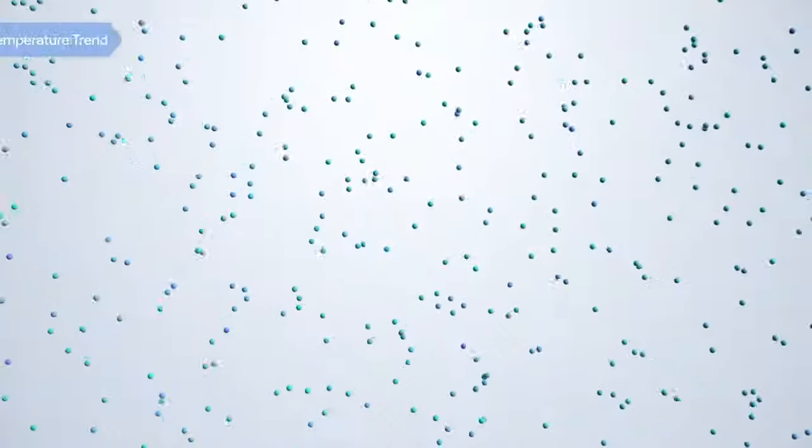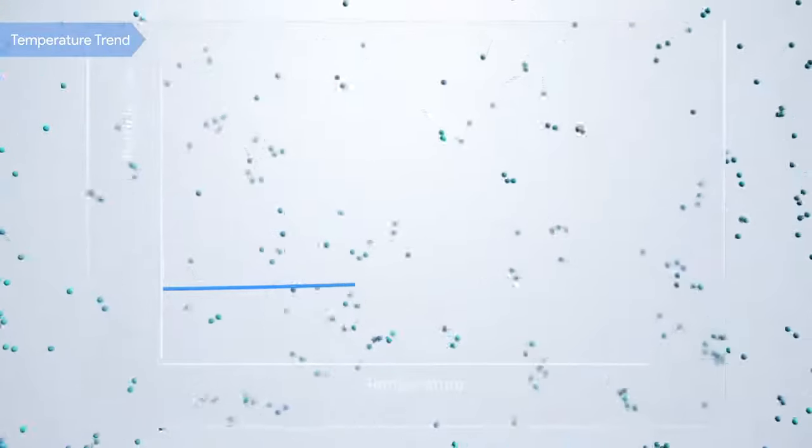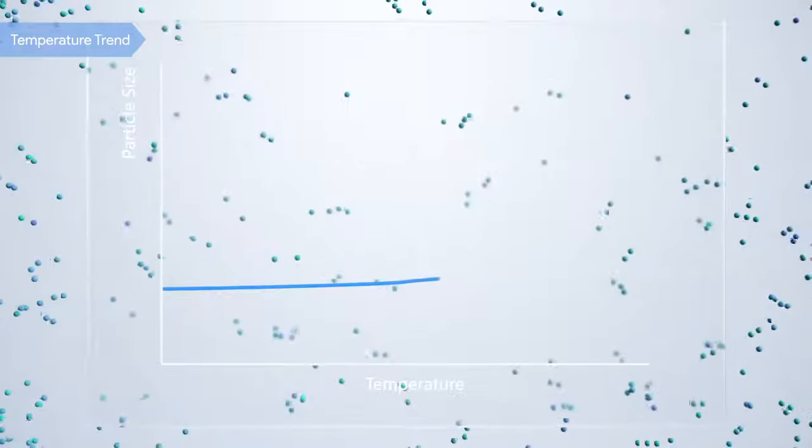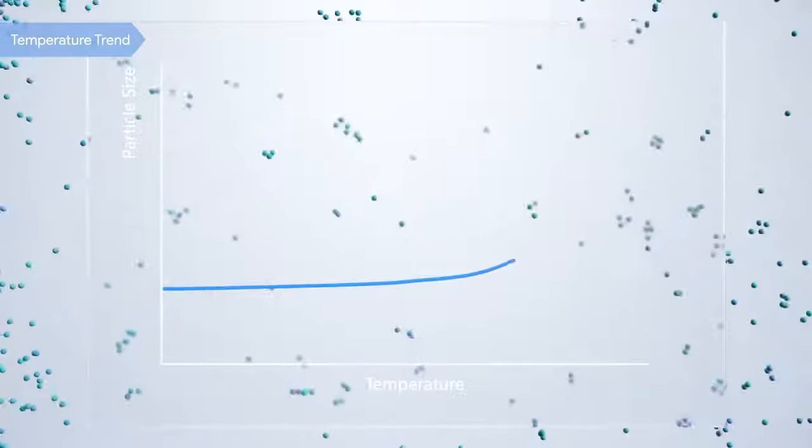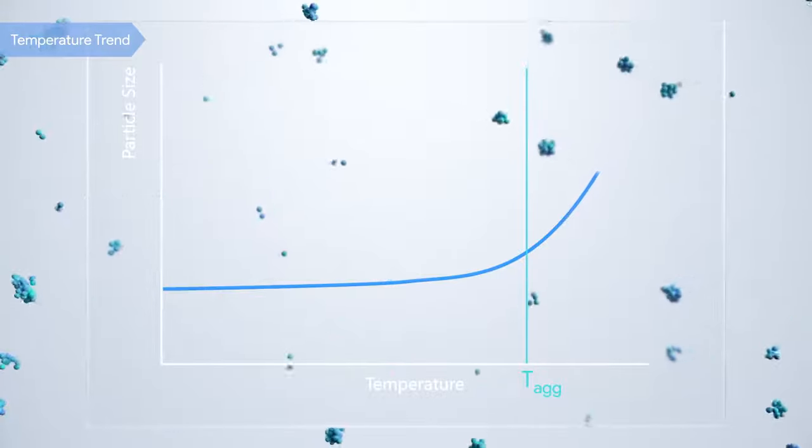For thermal sensitive samples, a temperature trend can be performed easily with a programmed SOP. The B-Nano software can also detect the temperature transition point of the size results, which is the aggregation temperature of protein samples.